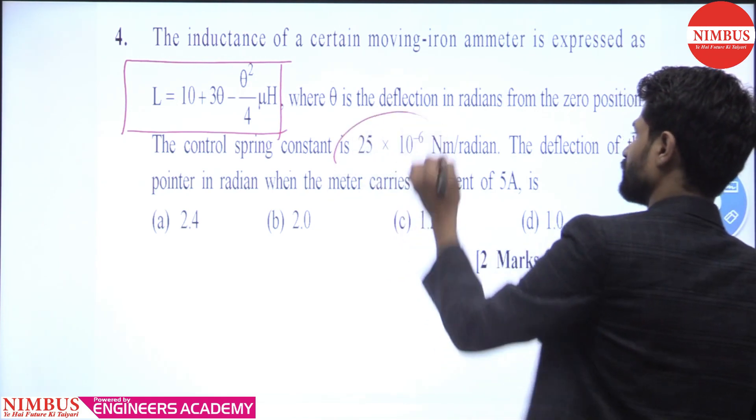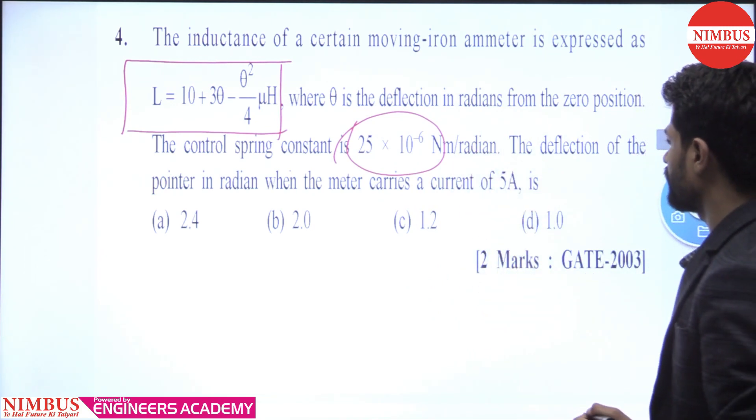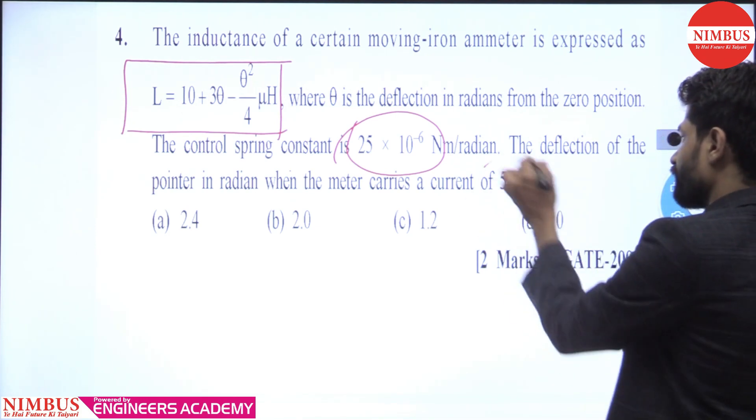The control spring constant is 25 into 10 to the power minus 6 Newton meter per radian. Find the deflection of the pointer in radians when the meter carries a current of 5 ampere.